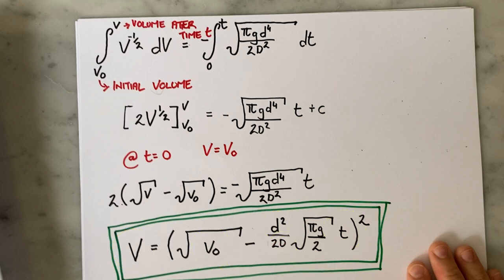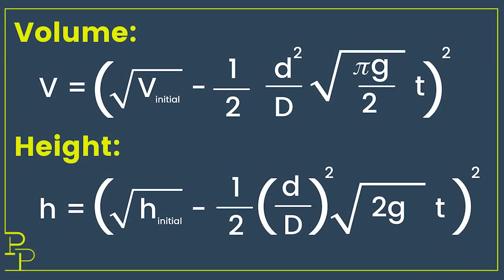I of course consulted the internet to double check my working out. I see it's more popular to show this equation in terms of the height of the liquid in the tank rather than the remaining volume of the tank, but here you have both. Note that there are subtle differences in the equation so be careful of them.